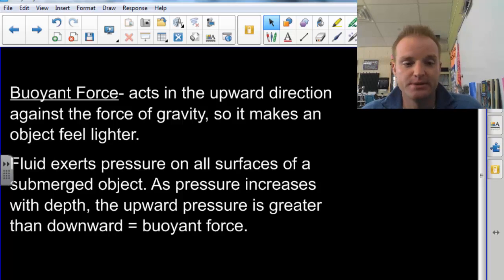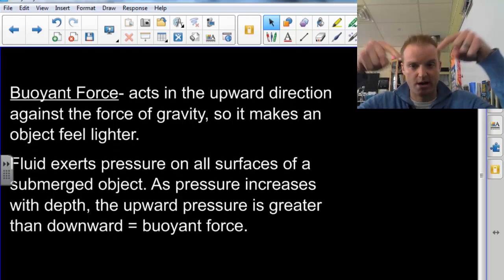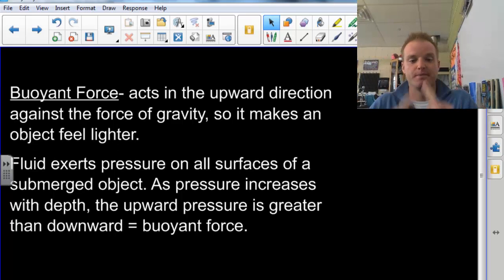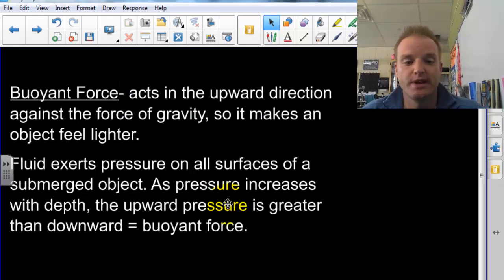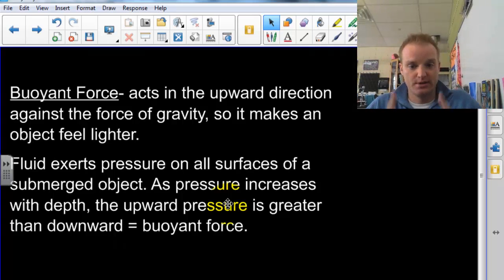The way this happens is we have fluid exerting pressure on all surfaces of a submerged object. So if it's underwater, it's pushing down, pushing on the sides, and pushing up. As pressure increases with depth, the upward pressure is greater than the downward pressure, and that equals that buoyant force. Since the object's deeper at the bottom, there's more force pushing up than pushing down. Because the deeper you go, the more pressure there is.